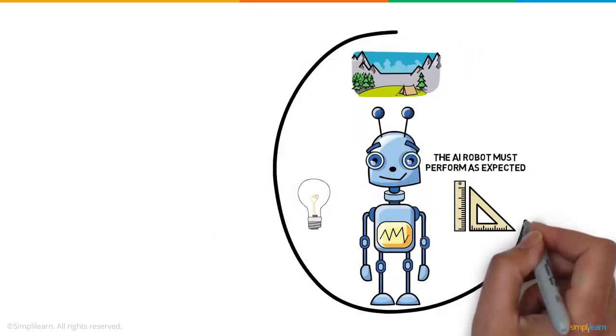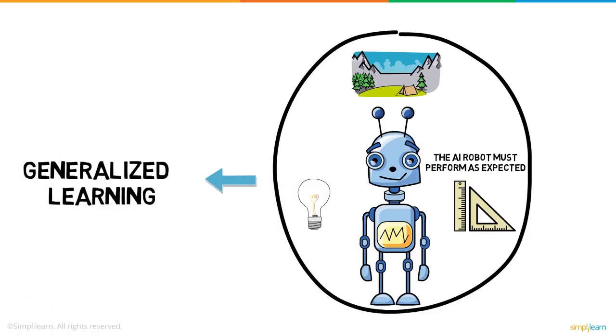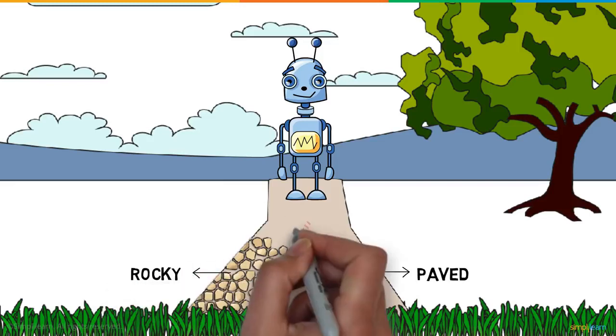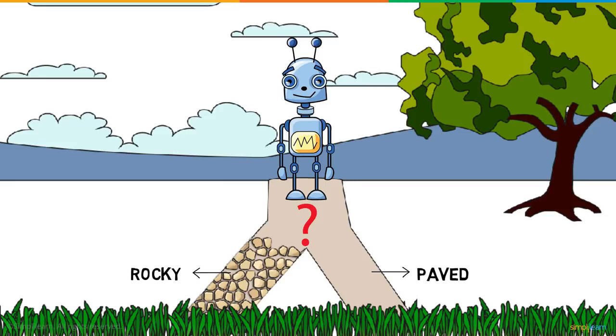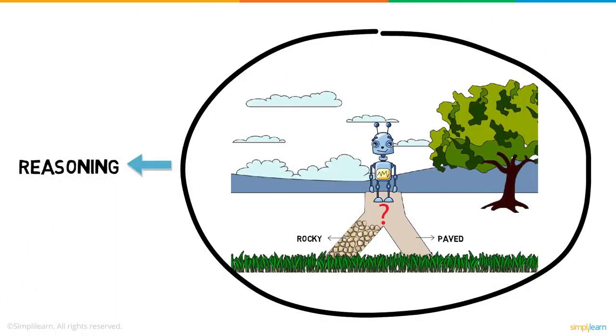This ability to react appropriately to a new situation is called generalized learning. The robot is now at a crossroad, one that is paved and the other rocky. The robot must determine which path to take based on the circumstances. This portrays the robot's reasoning ability.